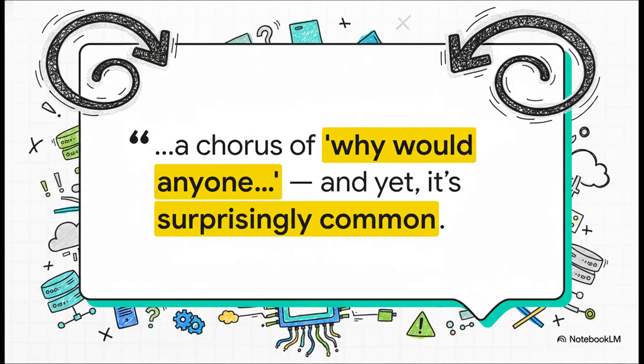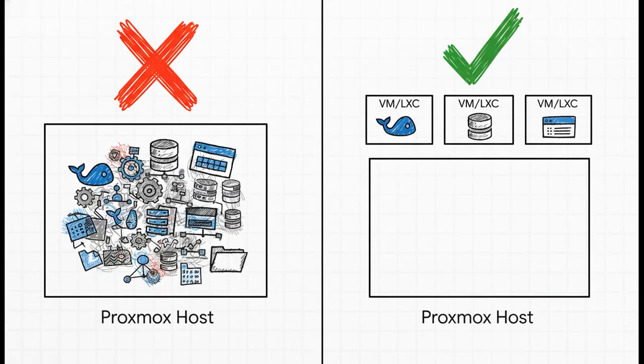I just love this quote from the community. It perfectly sets up our next couple of pitfalls. You'll hear experts say, why would anyone do that when it comes to running extra services directly on the hypervisor? But the truth is, it happens all the time, and it's a huge mistake. And this all leads us to the golden rule and our last few mistakes. Number seven, running Docker directly on the Proxmox host. I get it. It seems convenient, but it can create dependency conflicts and stability issues that are an absolute nightmare to troubleshoot. And that leads right into mistake number eight, running any other service on the host. File shares, web servers, you name it. Your hypervisor should be lean, it should be clean, and it should be dedicated to just one thing, running VMs and containers. Put everything else inside a VM. Isolate everything.